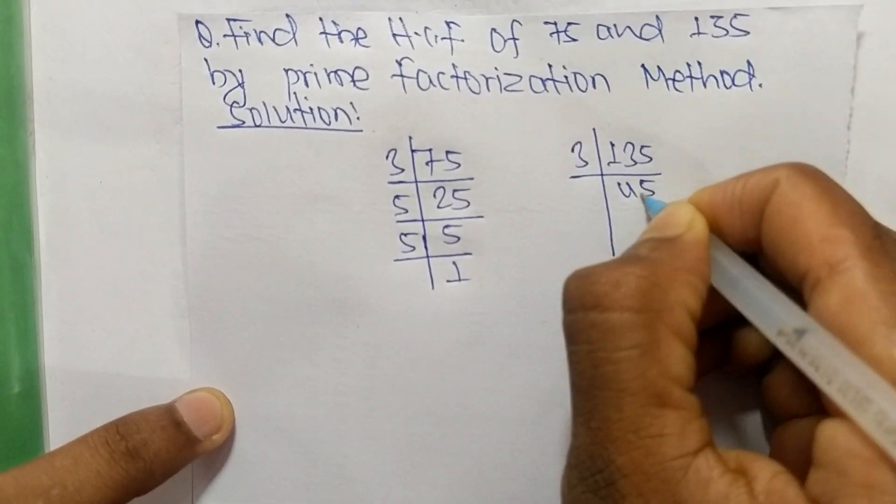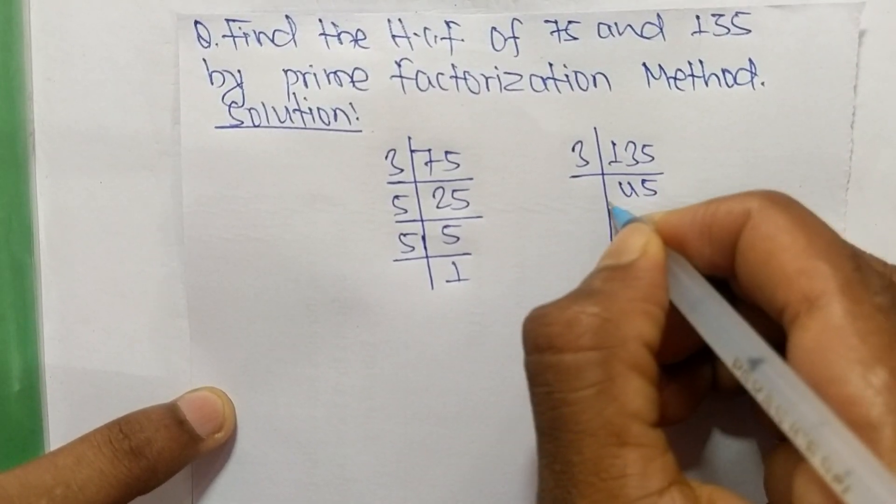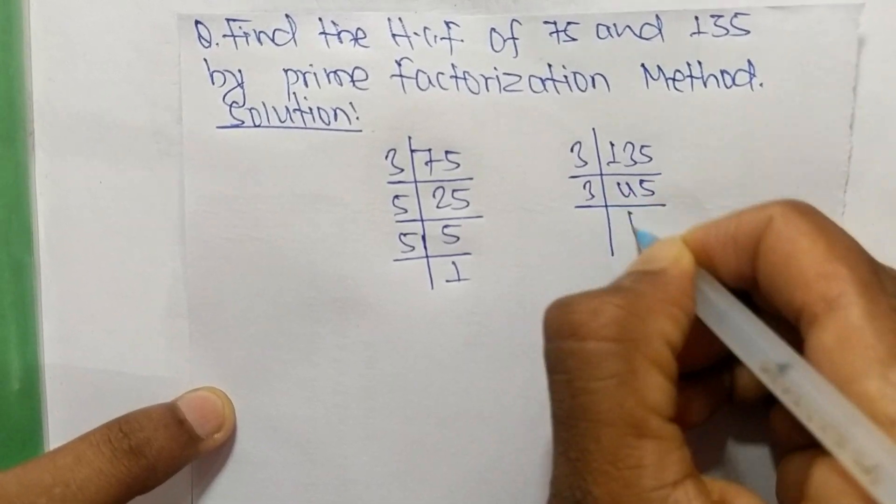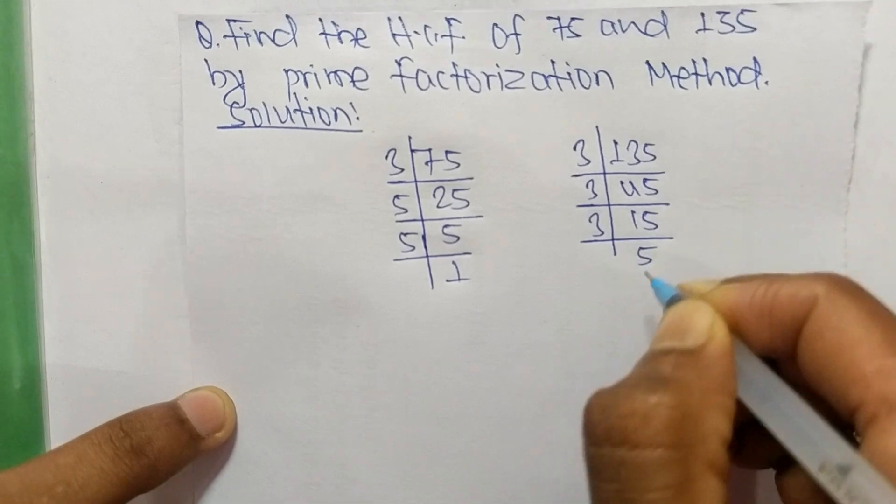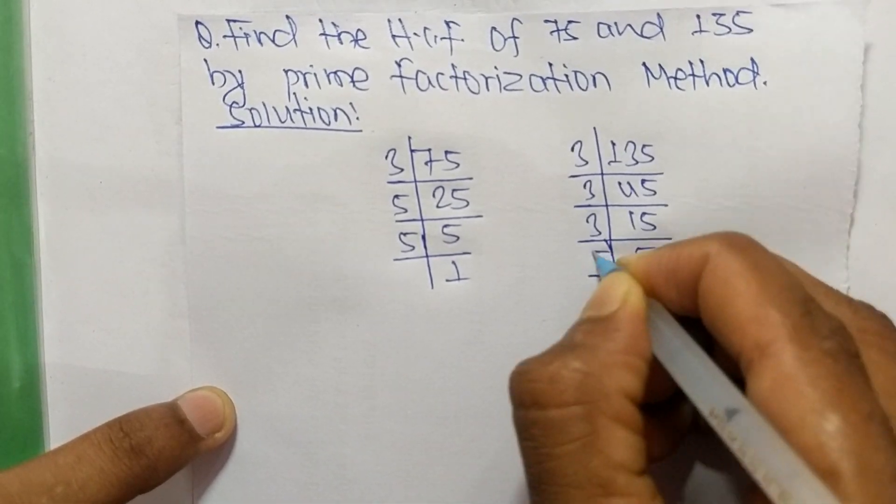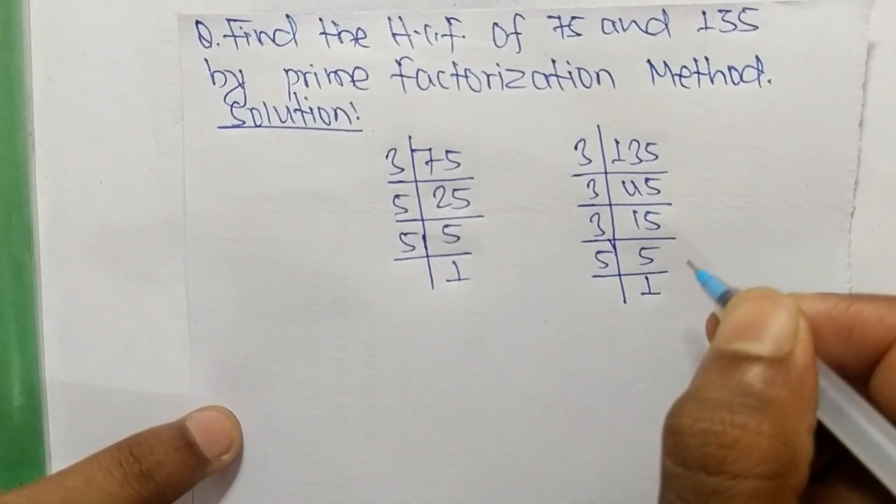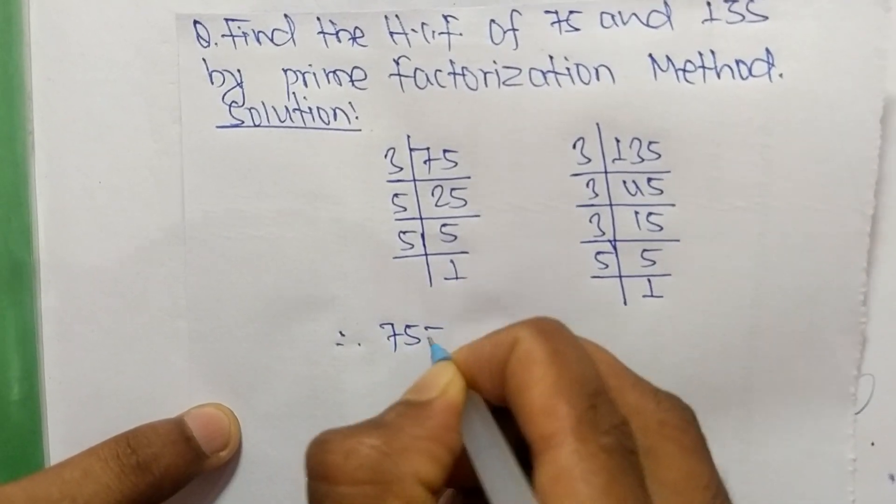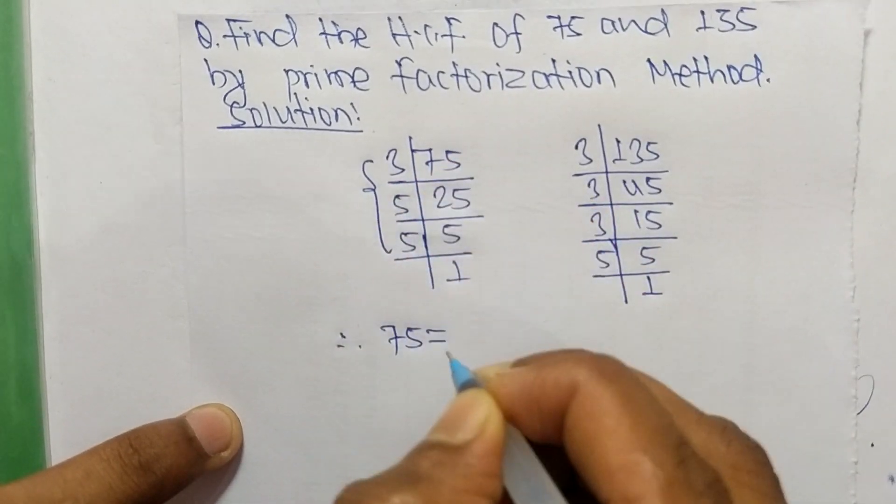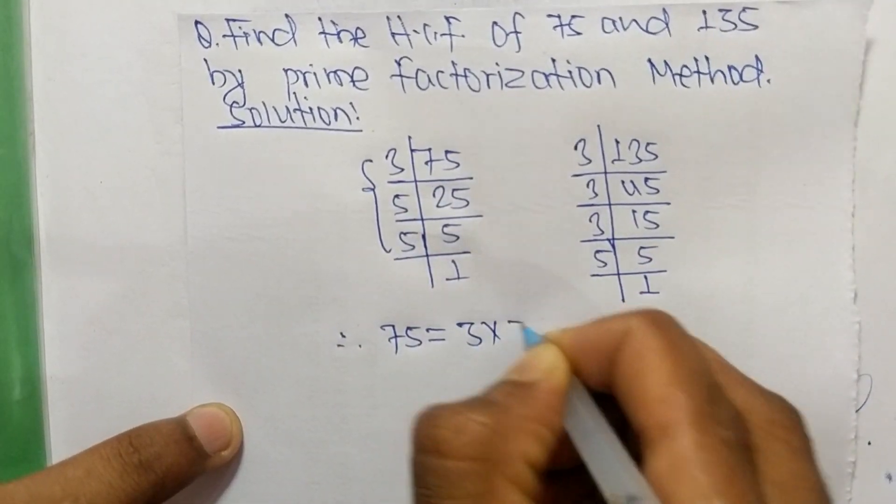3 times 45 equals 135, 3 times 15 equals 45, 3 times 5 equals 15, and 5 times 1 equals 5. From these prime factors, we can write 75 equals 3 times 5 times 5.